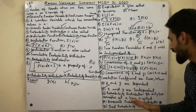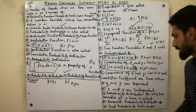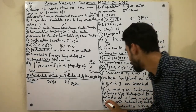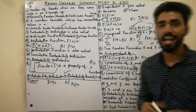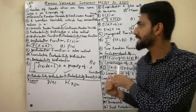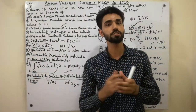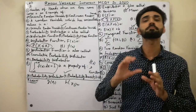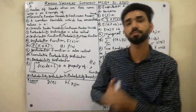The last MCQ: a probability distribution for only two variables is called a bivariate distribution. Thanks for watching. If you like the video, please subscribe to my YouTube channel and press the bell and like buttons to get notifications for new lectures. Goodbye.